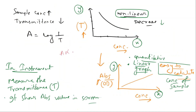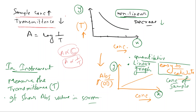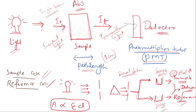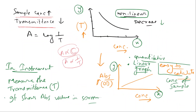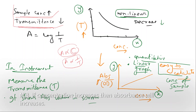The absorbance and concentration are related. Let us see this example: when we have sample concentration on a sample layer, we look at the transmittance value. This is the basic fundamental. We can plot a graph of transmittance versus concentration.